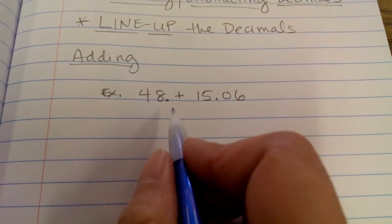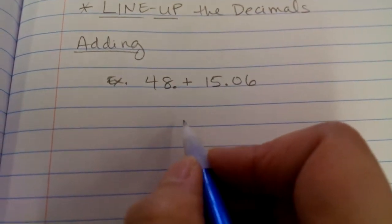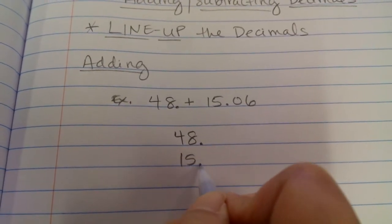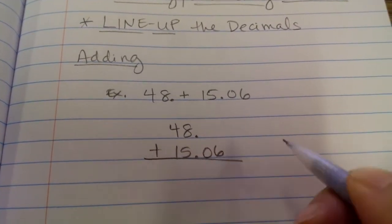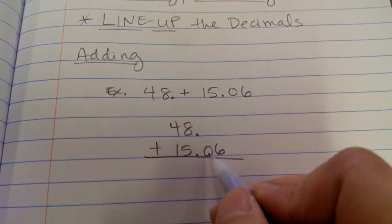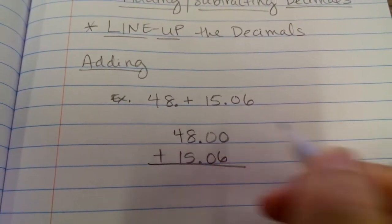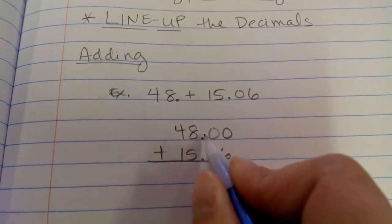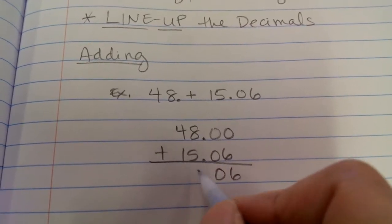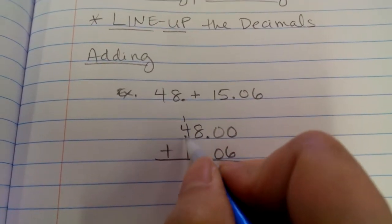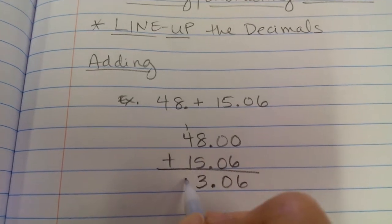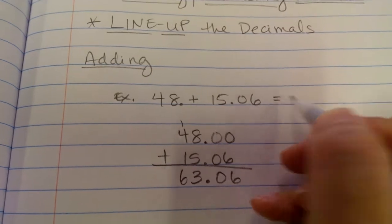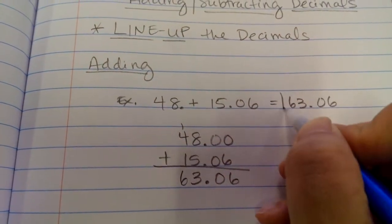So it is 48 plus 15 and 6 hundredths. So I'm going to rewrite it vertically. You have to rewrite it vertically in order to line up the decimals. So I'm going to do 48, and there's my decimal, plus 15 and 6 hundredths. Now if there's no number above these digits, what do we put? We put zeros. And then you add. 0 plus 6 is 6. 0 plus 0 is 0. Bring down the decimal. 8 plus 5 is 13. Carry the 1. 1 plus 4 is 5. Plus the 1 is 6.